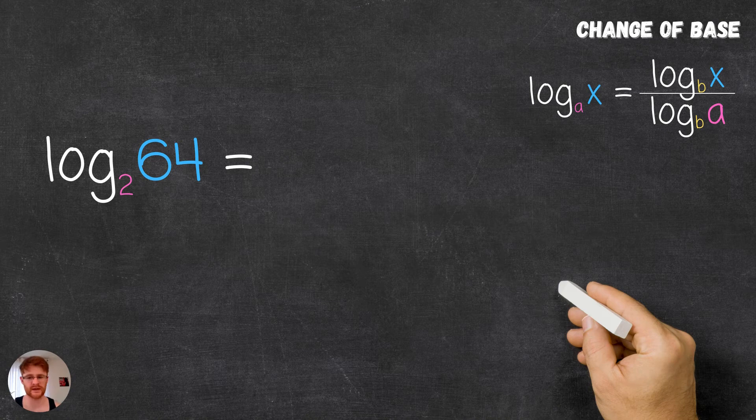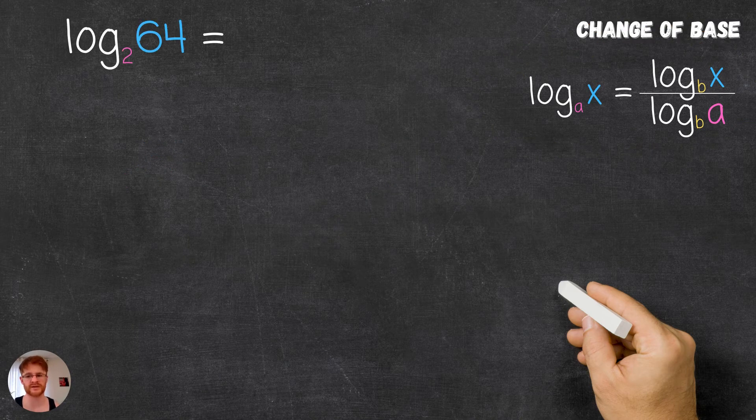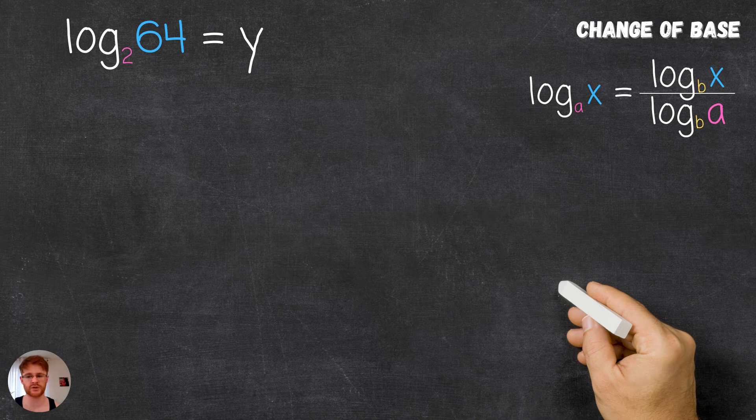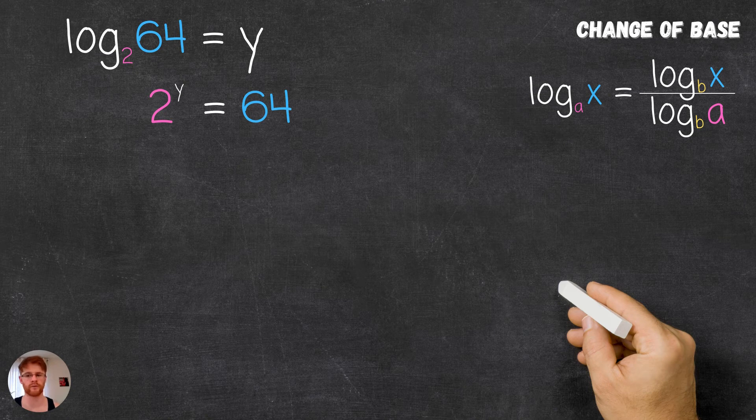Now we're going to use this example to derive the change of base relation. Let's start by letting our log base 2 of 64 equal y. According to the definition of logs as discussed in a previous video, this equation in log notation can be written in index notation: 2 to the power of y is equal to 64.